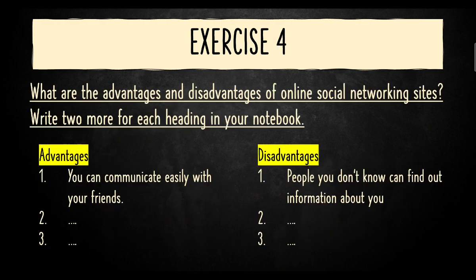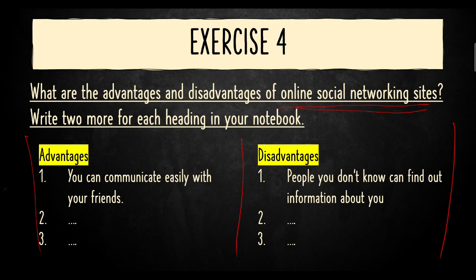Exercise four is also on the same page. What are the advantages and disadvantages of online social networking sites? Write two more for each heading in your notebook. Draw a column — one for advantages and one for disadvantages of using online social networking sites such as Facebook, Twitter, and Instagram. The examples are already given; you only need to add two more for each. I want you to Google for the answers to practice searching for information online.